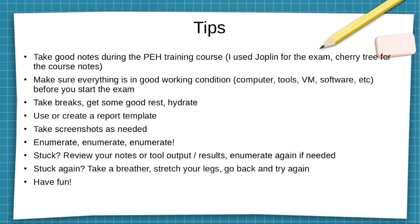Enumerate, enumerate, enumerate. If you get stuck somewhere, it may come back to enumeration — maybe you didn't enumerate enough or need to go back and check the tool outputs. Take a look at your ethical hacking methodology; maybe there's something amiss. If you're stuck, review your notes, check tool output and results, and enumerate again if needed. If still stuck, take a breather — don't worry yourself out. Stretch your legs, go back and try again.